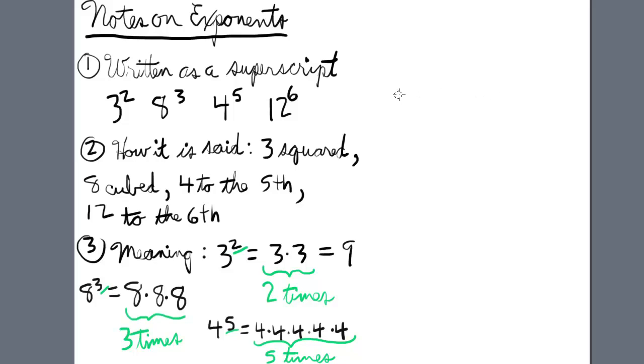Okay, notes on exponents. First you need to know exponents are written as a superscript. What is a superscript? That's something that's written on the upper part of a line. So in this case, 2 is written as a superscript.